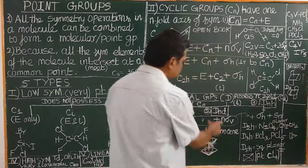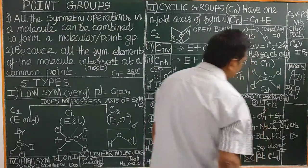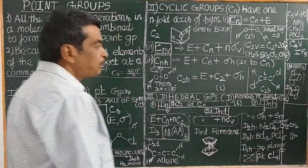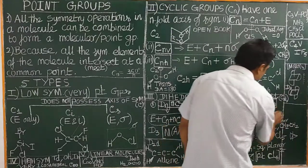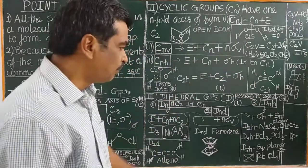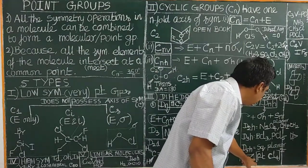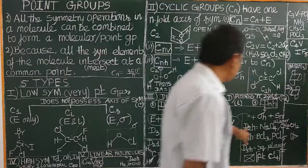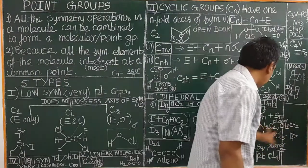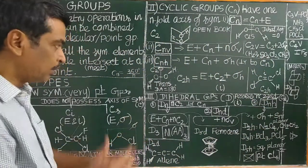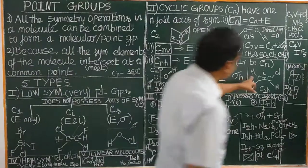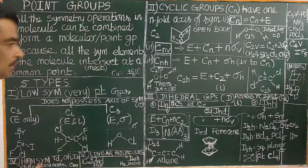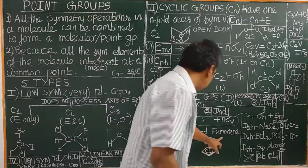DnH, in addition to the elements of Dn, also has sigma H plus improper n-fold rotational axis, and also an inversion center i. For example, BCl3 belongs to D3H, which has the inversion center i. You can find the center of symmetry by drawing a line from the center. The D5D configuration also exists for certain molecules.